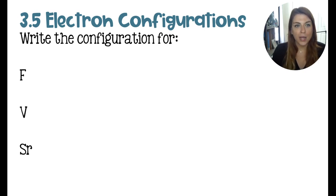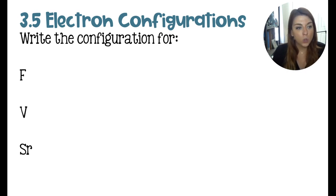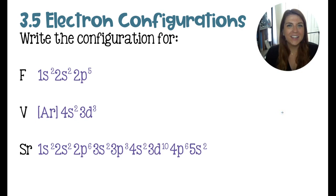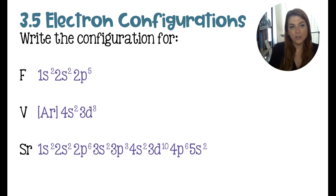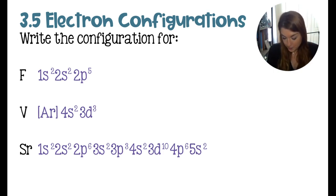Now I would love for you to write some electron configurations. There are three elements: fluorine, vanadium, and strontium. For fluorine, it's in the p block, so the last principal quantum number corresponds to its period number. That gives us 2p, and since it is the fifth element in the p block, it would be 2p5.